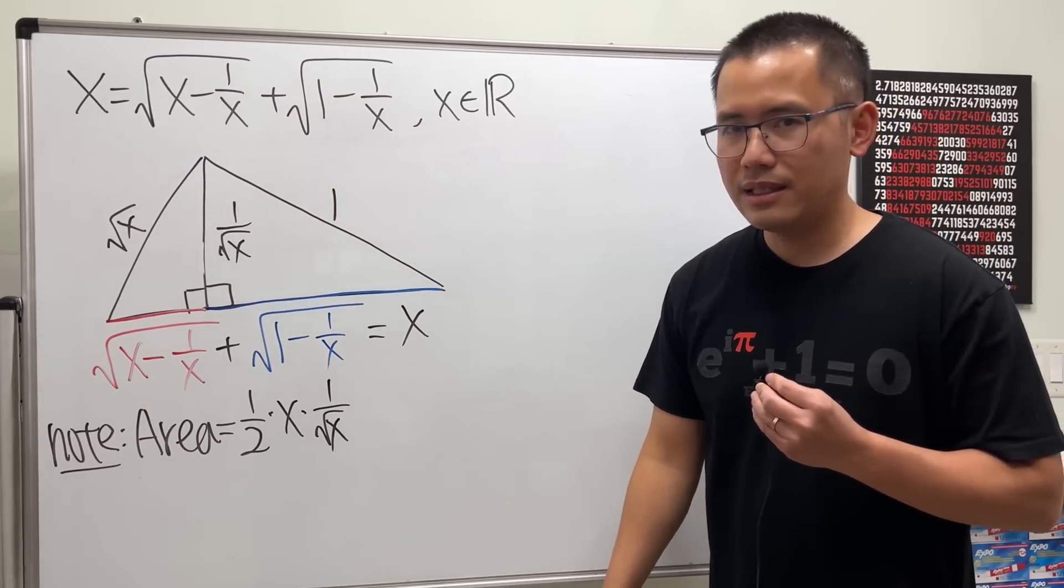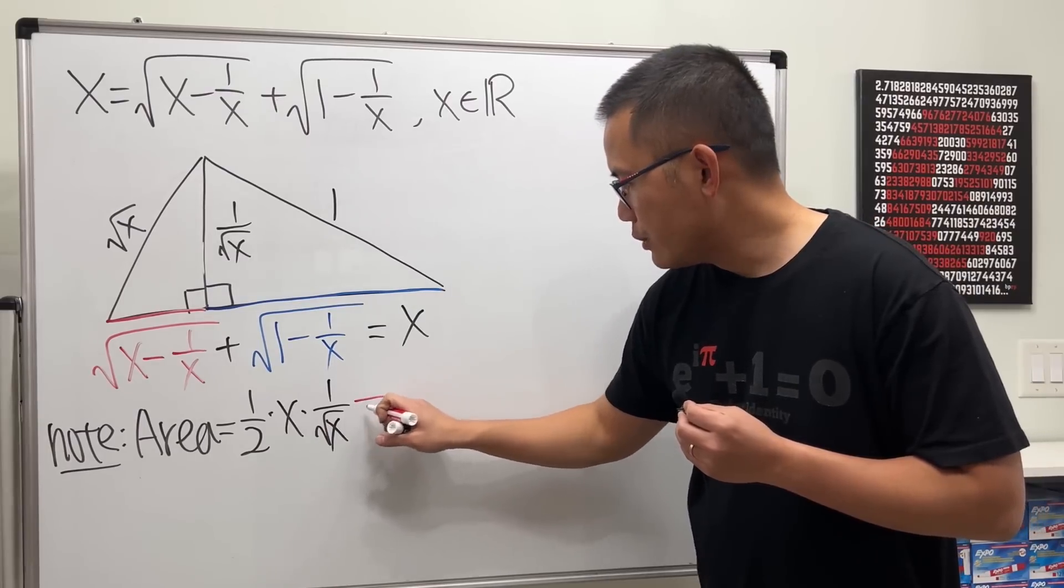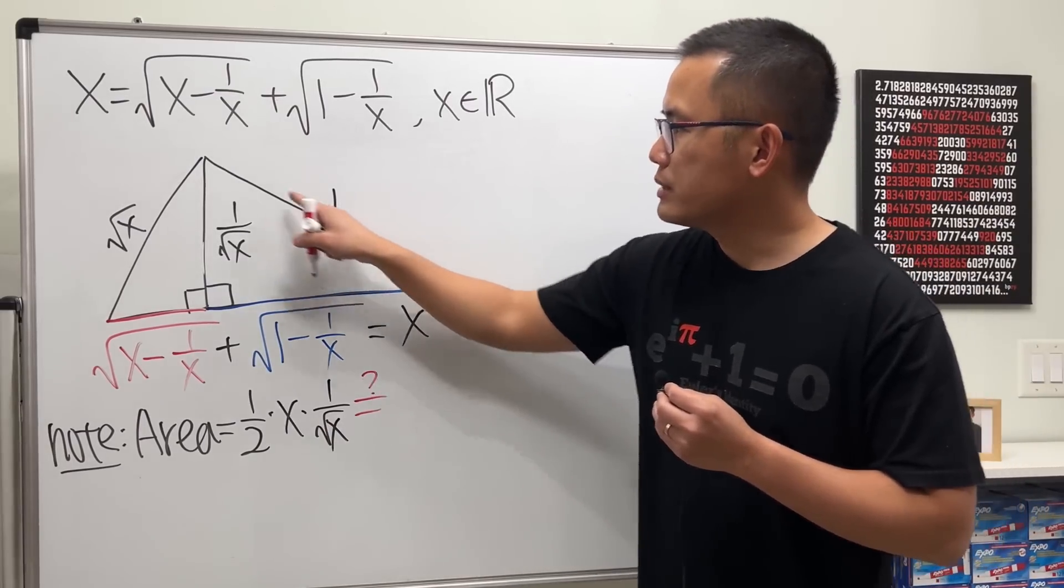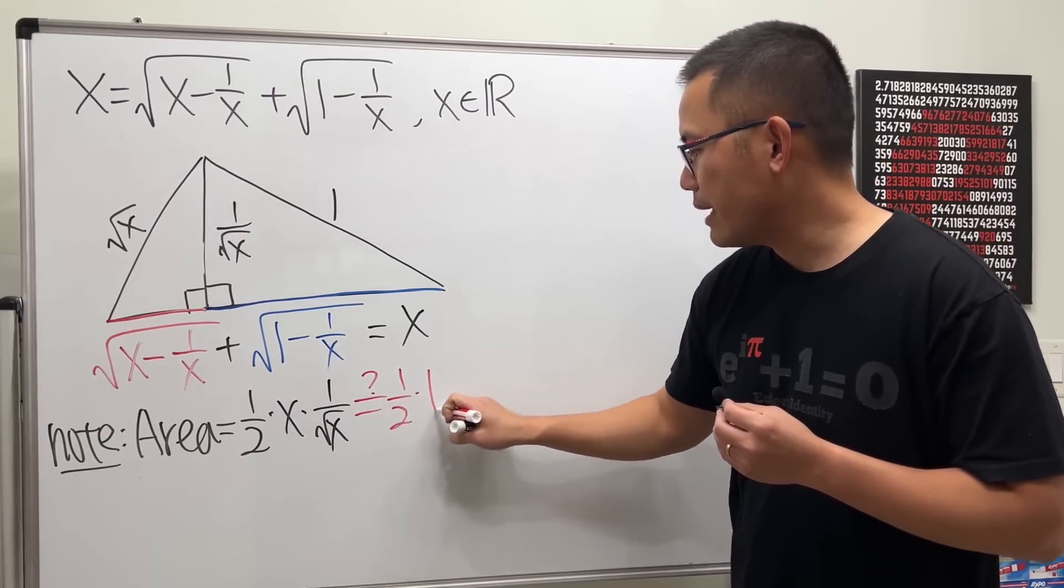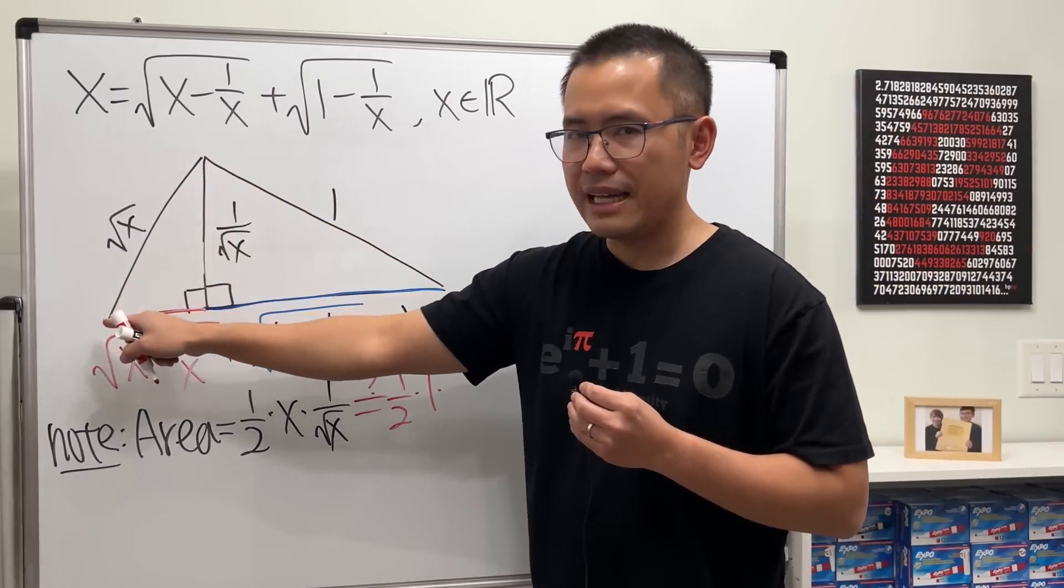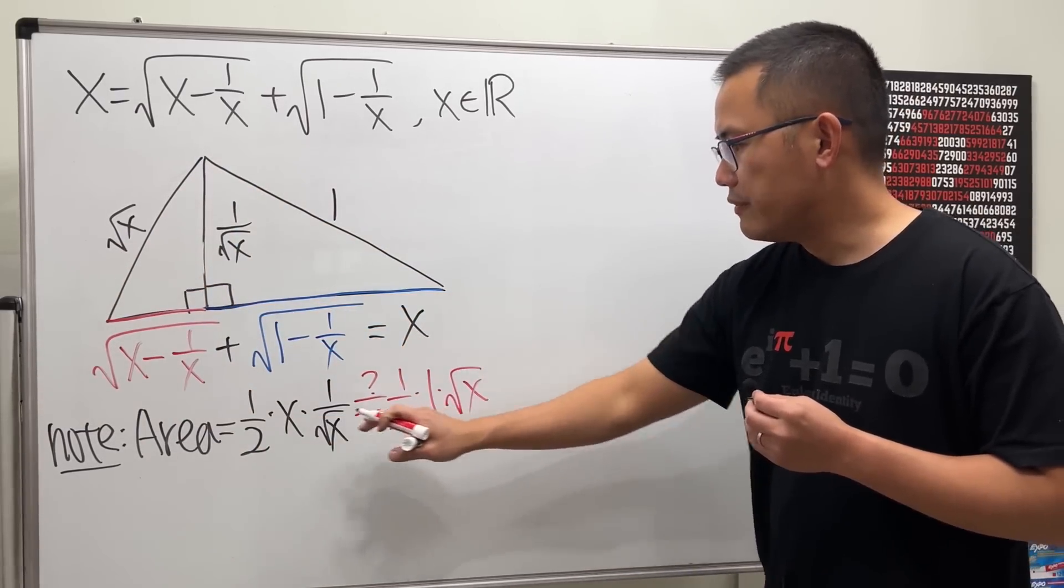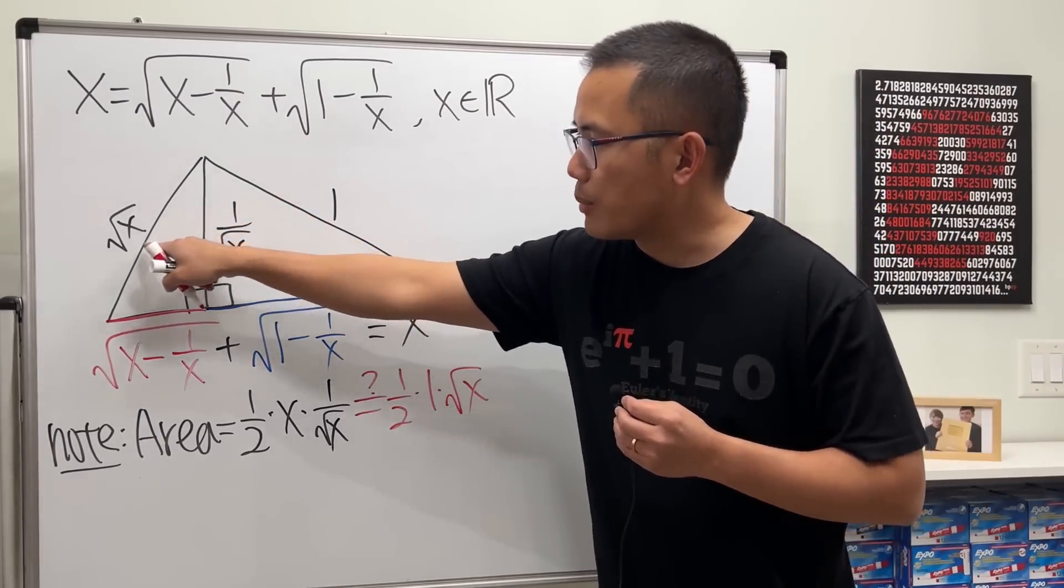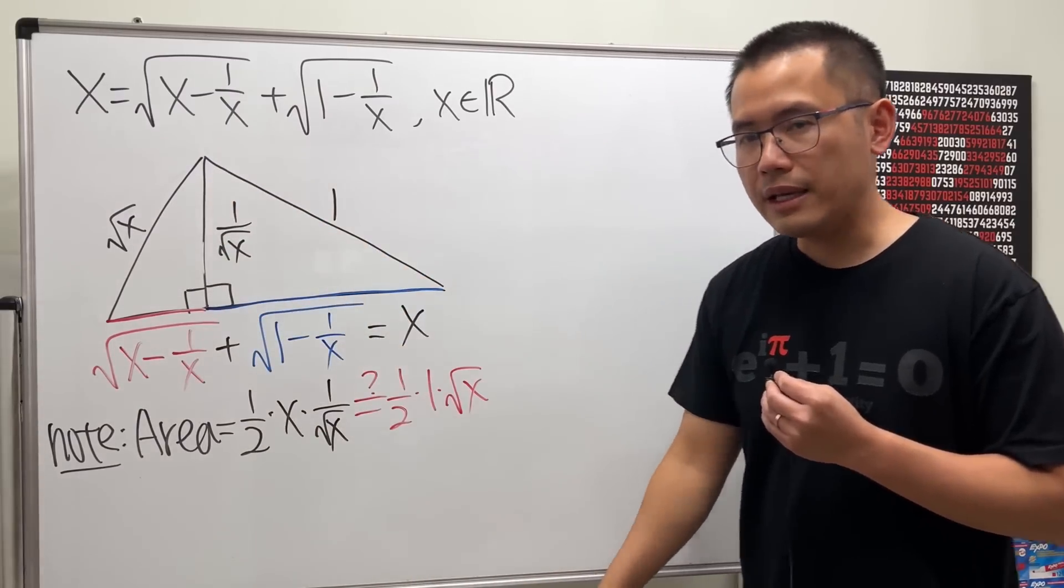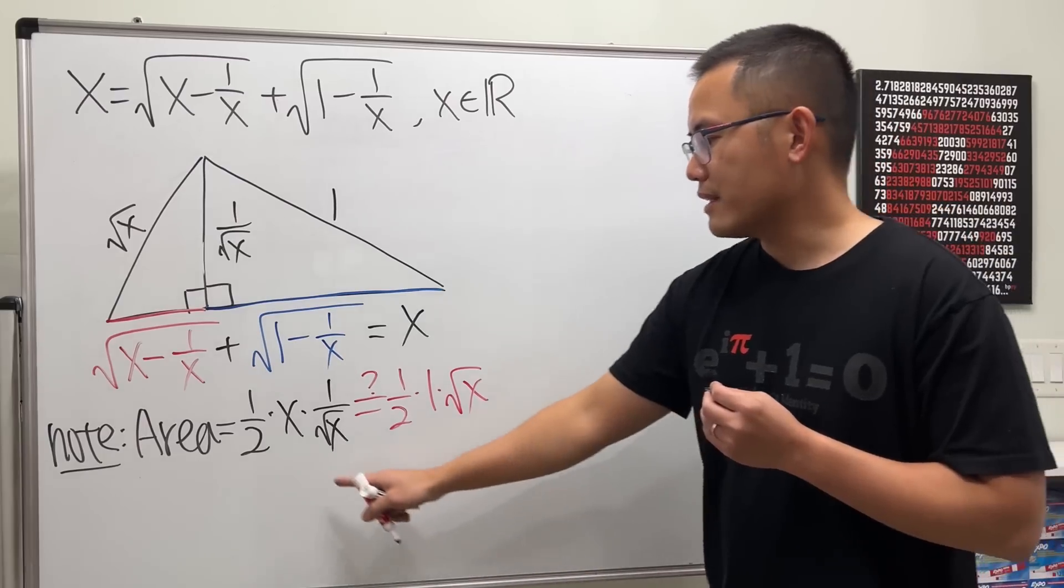So we would like to compute: suppose this is the base, and then let's just go ahead and do 1/2 times base times that height. Supposedly, if this is true, then we can say that this is the base, that will be the height, and that will be the right angle. Well, in fact it is true because...